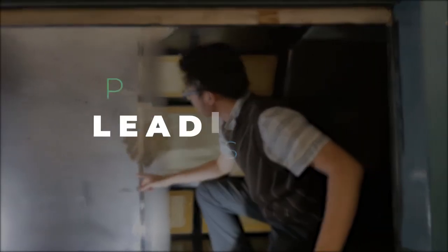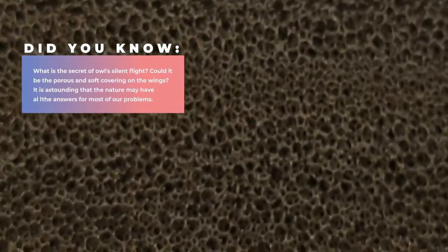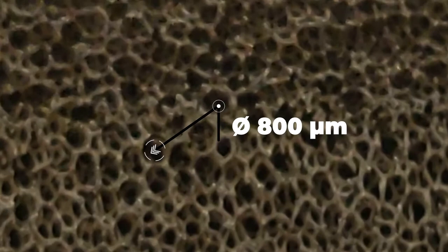In this study, we are investigating two types of noise mitigation techniques, the porous leading edge and leading edge serrations. The porous material, as its name implies, has open pores that allows fluid to flow within the material. The sample that I'm showing here is an aluminum metal foam with an average pore diameter of 800 micrometers.